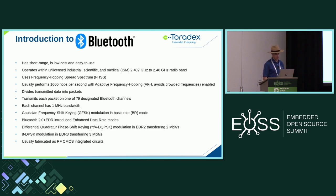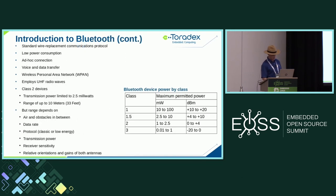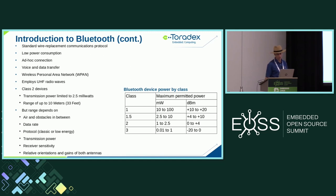Chips are usually fabricated in RF-CMOS technology. It's a standard wire-replacement protocol and is low power — as shown in the table, Bluetooth classes define how many milliwatts (and corresponding dBm) are allowed. It allows ad hoc connection, voice or data transfer, and it's a wireless personal area network standard.